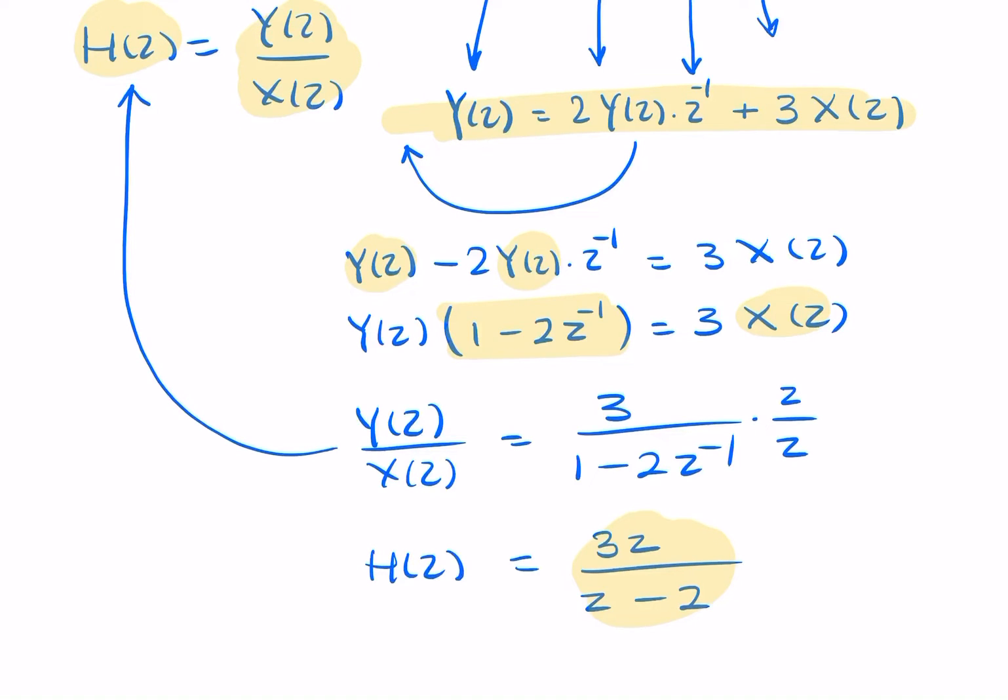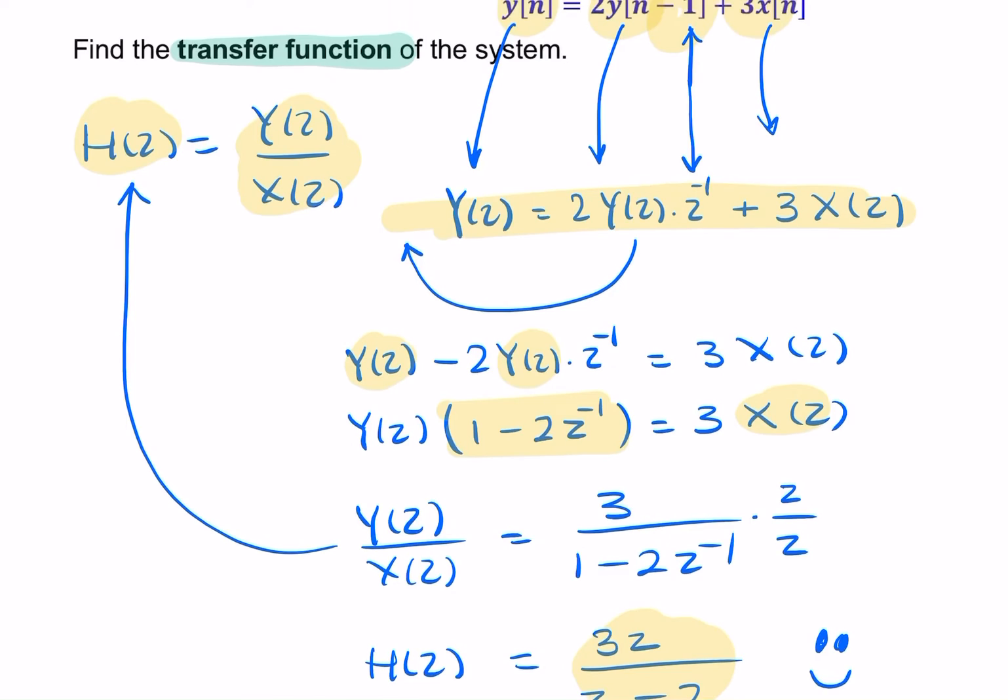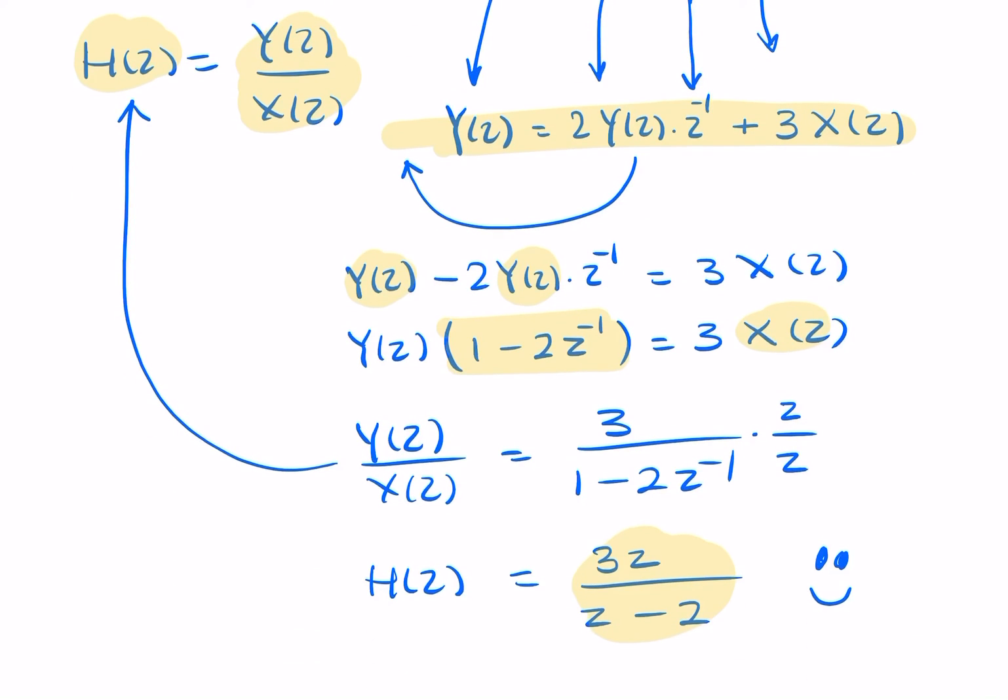So h of z equals, so that's our final answer. We found the transfer function of a system using a difference equation. We didn't have the impulse response. What we did have was the difference equation, and we managed to find the transfer function. Thank you.